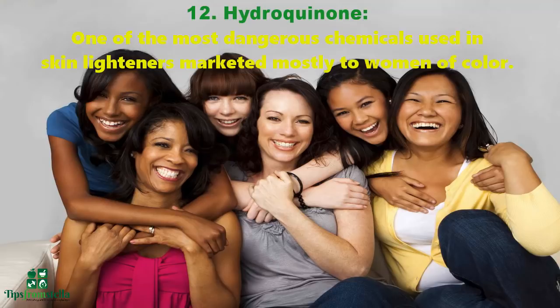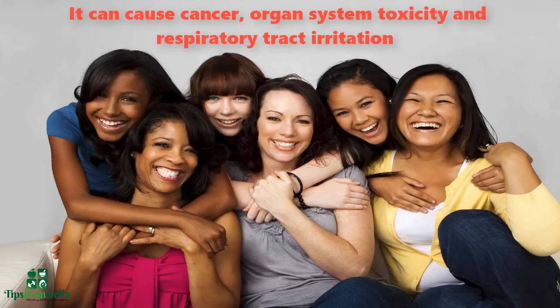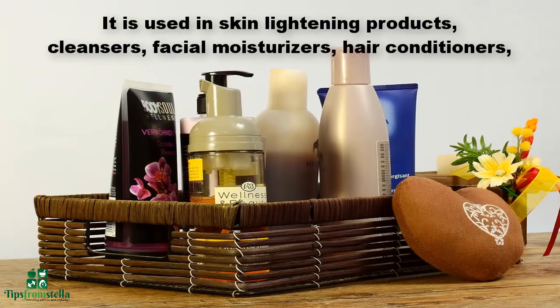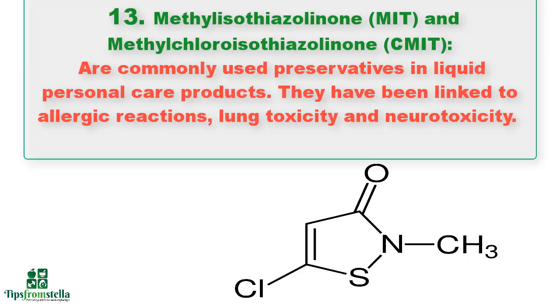Number twelve: hydroquinone. One of the most dangerous chemicals used in skin lighteners, marketed mostly to women of color. It can cause cancer, organ system toxicity, and respiratory tract irritation. It is allowed in the United States at up to 2% concentration but is banned in the European Union and restricted in Canada. Used in skin lightening products, cleansers, facial moisturizers, hair conditioners, and hair care products. Look out for hydroquinone or tocopheryl acetate on labels.